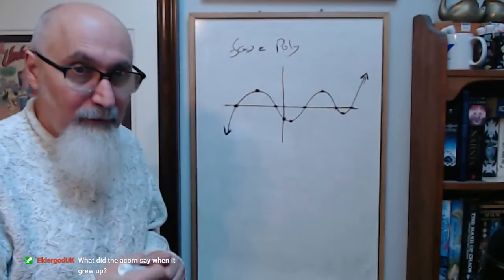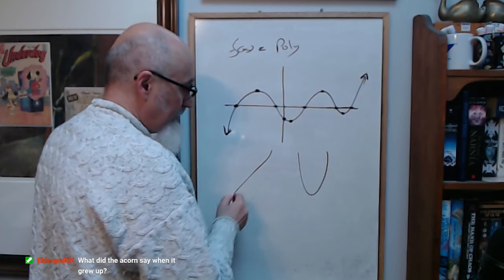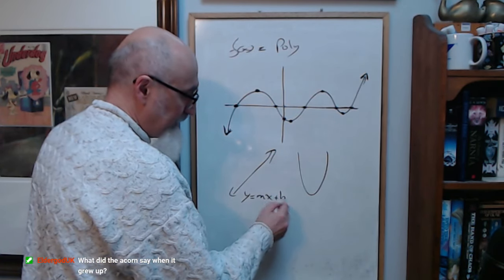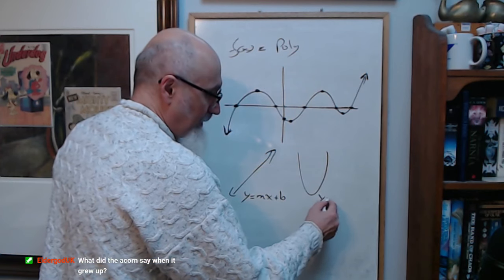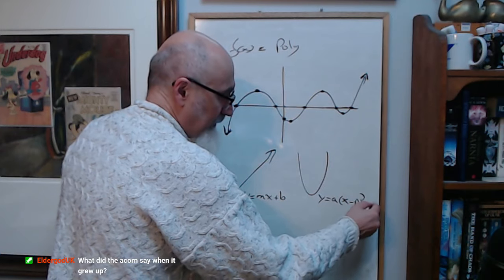To be able to graph polynomials, you need to be able to understand linear functions, y equals mx plus b, and quadratics, y equals a times x minus p squared plus q.